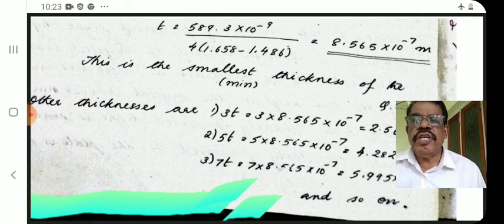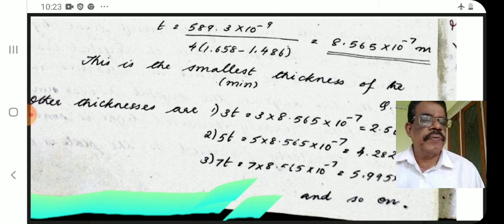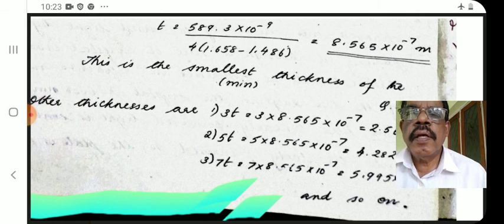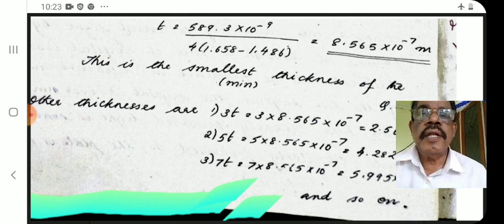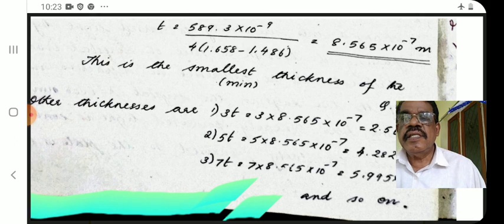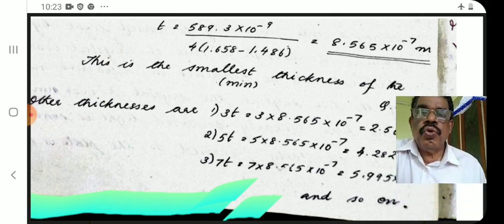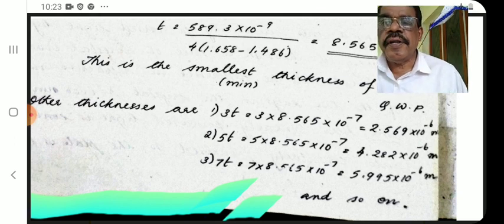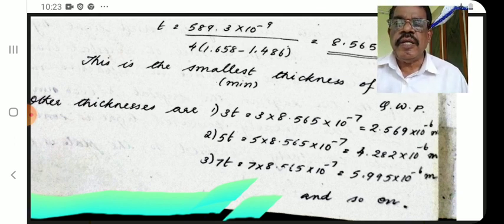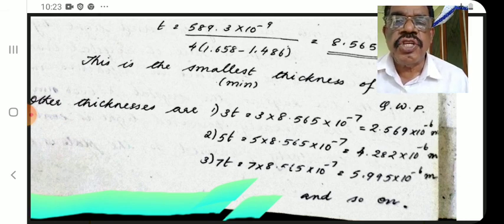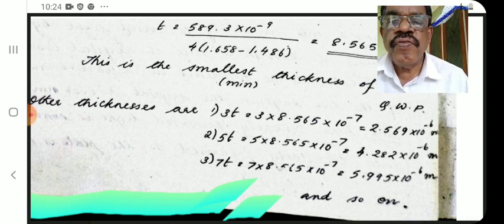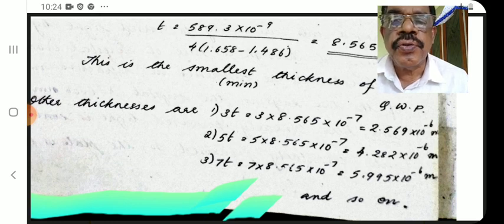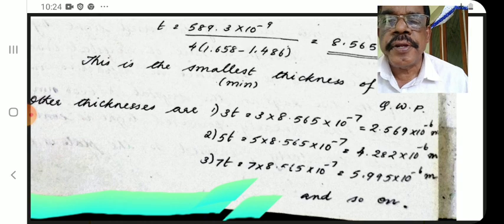t = 589.3 × 10⁻⁹ / [4 × (1.648 − 1.486)] = 8.565 × 10⁻⁶ meter. This is the minimum thickness of the QWP. Other allowable thicknesses are 3T, 5T, 7T, and so on: approximately 2.569 × 10⁻⁵, 4.28 × 10⁻⁵, 5.995 × 10⁻⁵ meter, and so on.